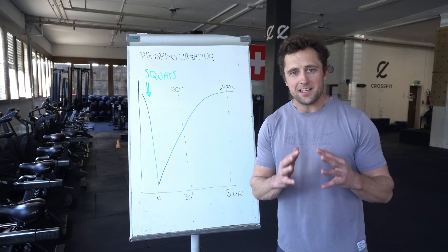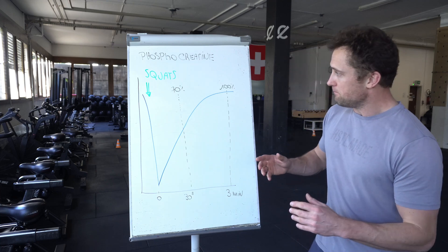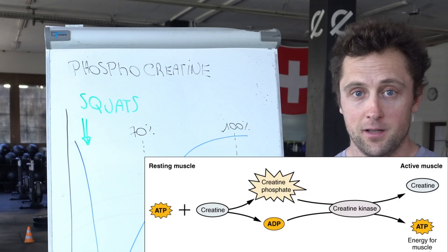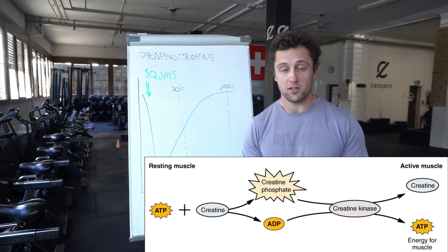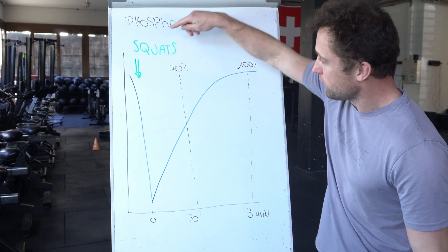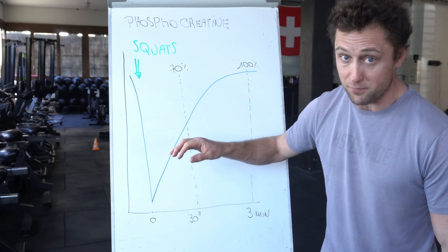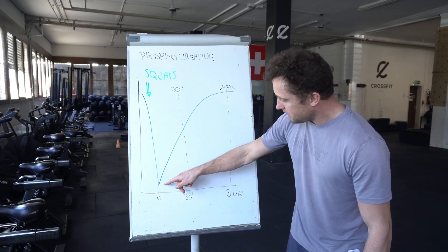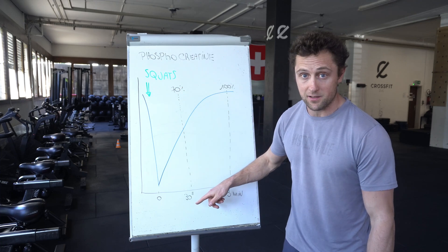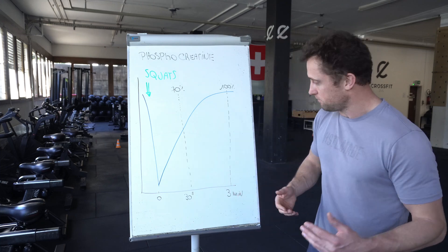If we look at energy production during something like a back squat set — four times eight for example — most of the energy, or at least a large part, is produced via phosphocreatine, the most powerful energy source in your body. When you start doing squats, the phosphocreatine stores are depleted very fast — going from 100% down to 10% or even 5% very quickly. Then around 70% is recovered after just 30 seconds of rest.